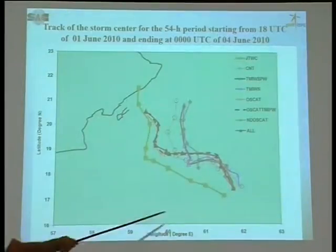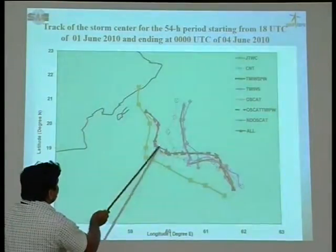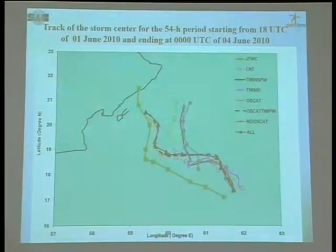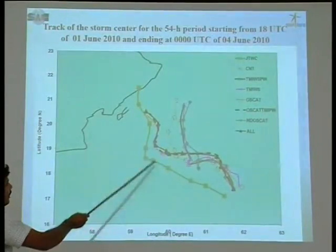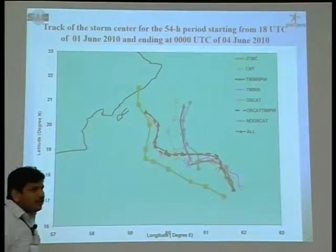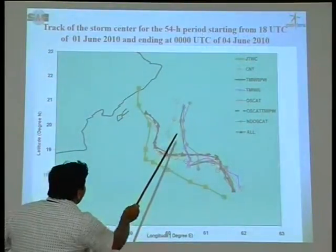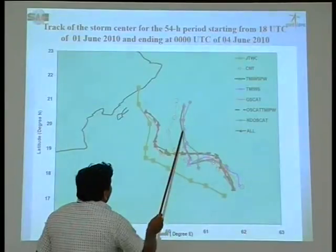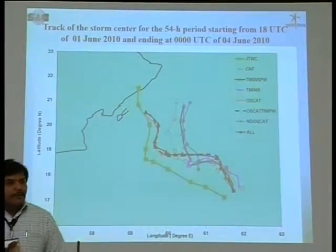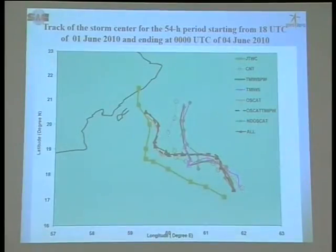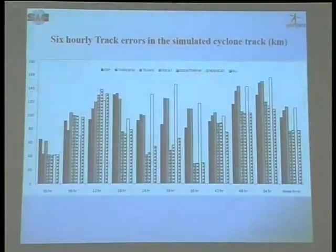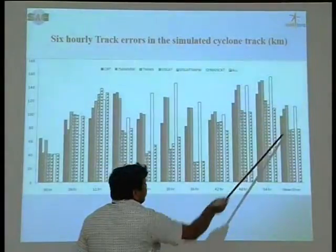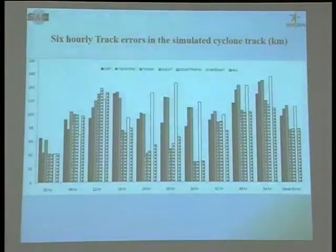These are the track forecast plots. The JTWC best observed track is shown, which we consider as the reference. These are three plots based on our OSCAT experiments, and the result is very interesting. When we do not use the scatterometer wind direction, it represents similar properties to the TMI radiometer. Overall, in all simulation cases when scatterometer wind is used, we have less track error.